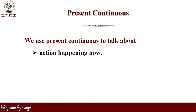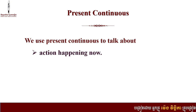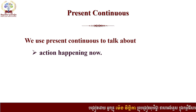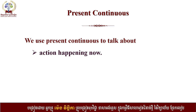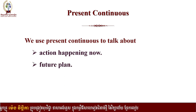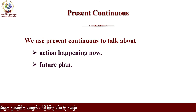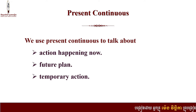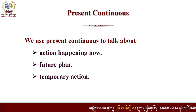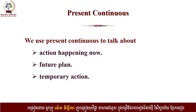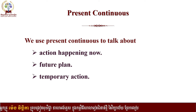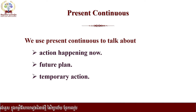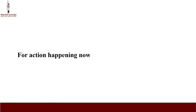For example, you are watching this video right now, so we use present continuous for an action happening right now. Next, present continuous can also be used to talk about future plans — like what you are going to do next week or next month. The last use is to talk about temporary actions — for example, you are studying online, which is a temporary action, and when school reopens we will go back.